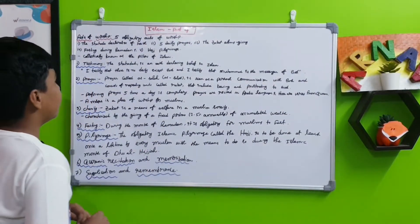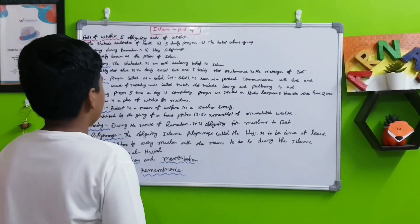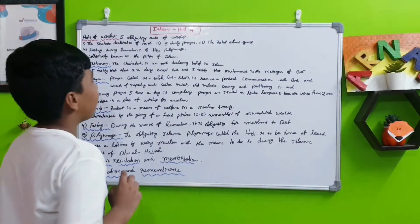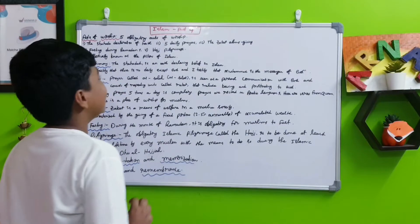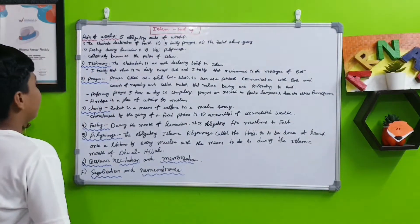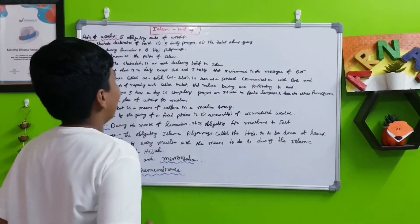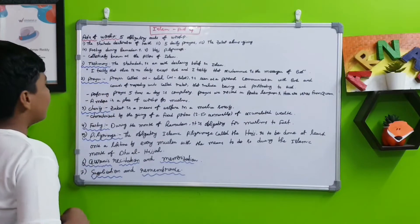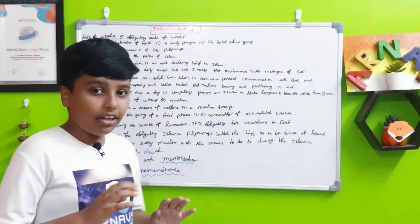The Shahada, the declaration of faith, is the first obligatory act of worship. Next, the five daily prayers, next the Zakat alms-giving, the fasting during Ramadan, and the Hajj pilgrimage. These are collectively known as the Pillars of Islam.